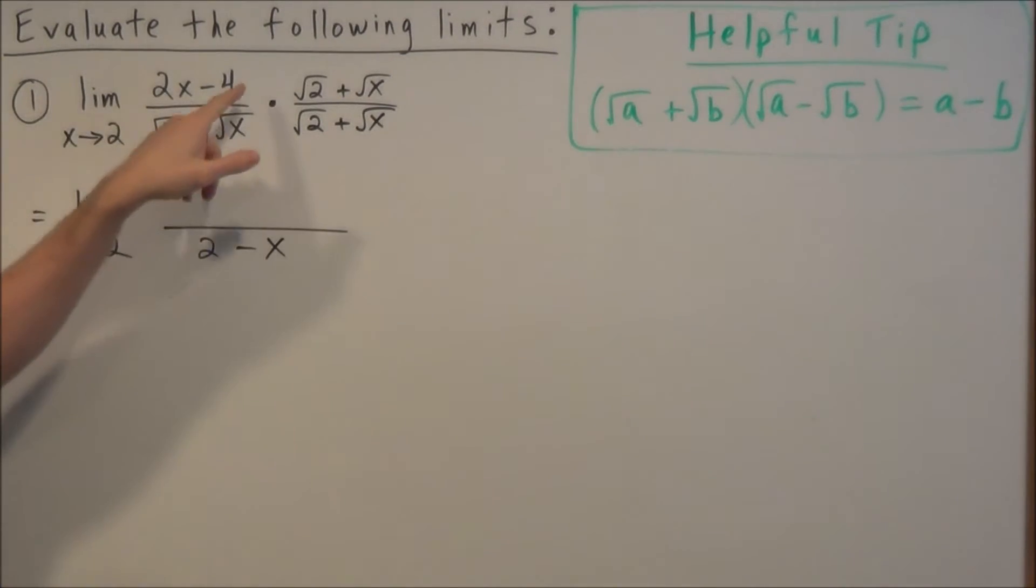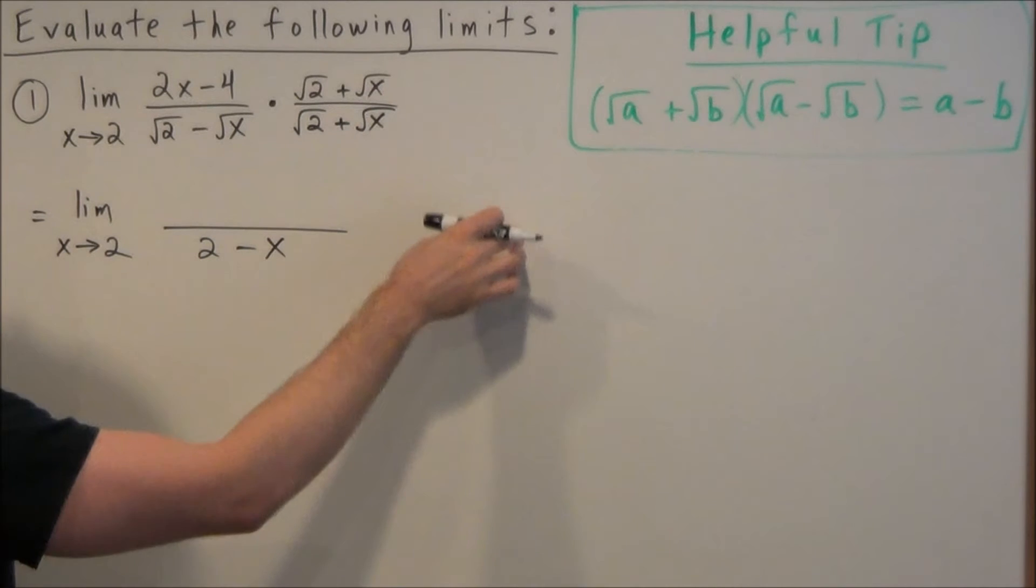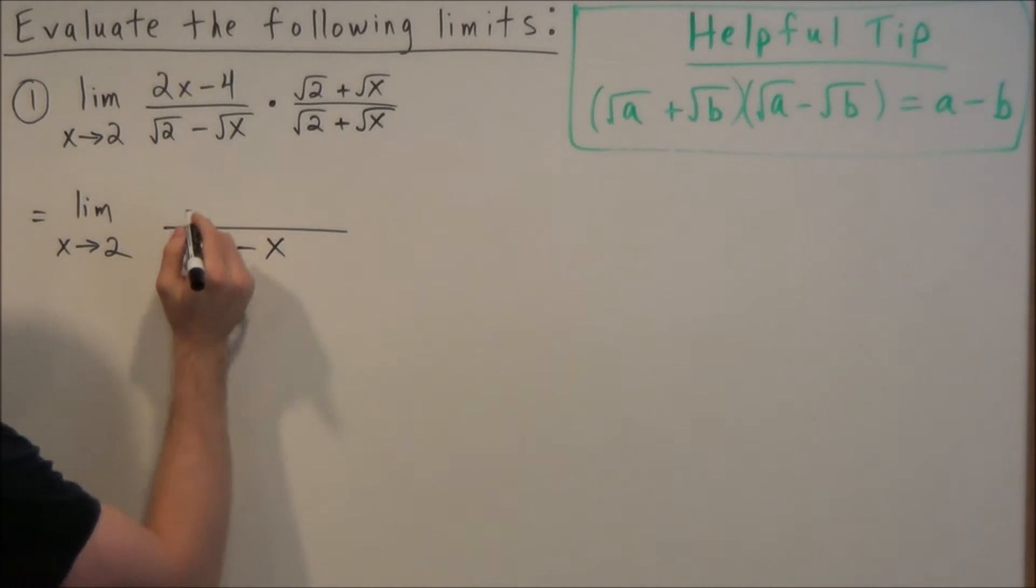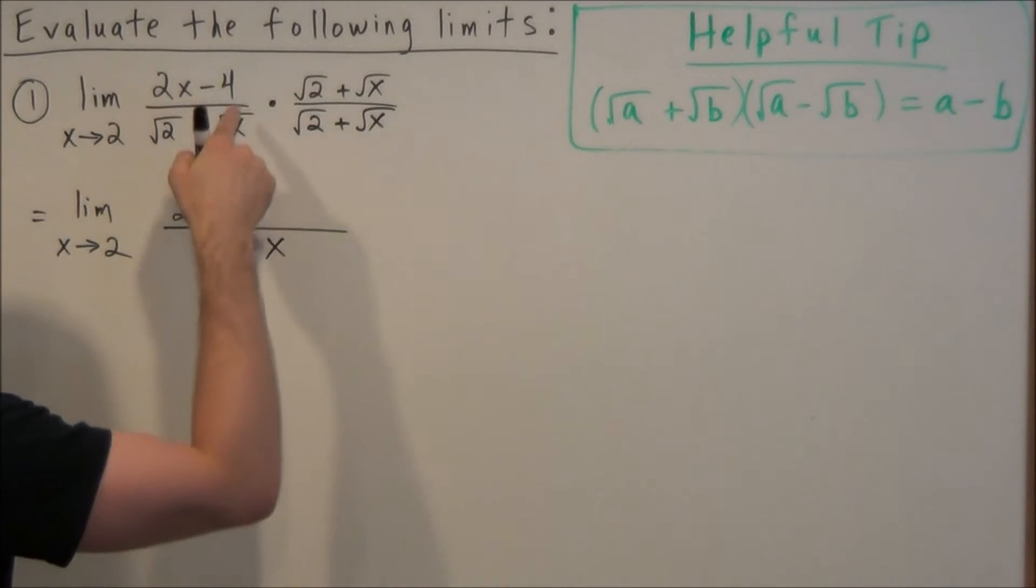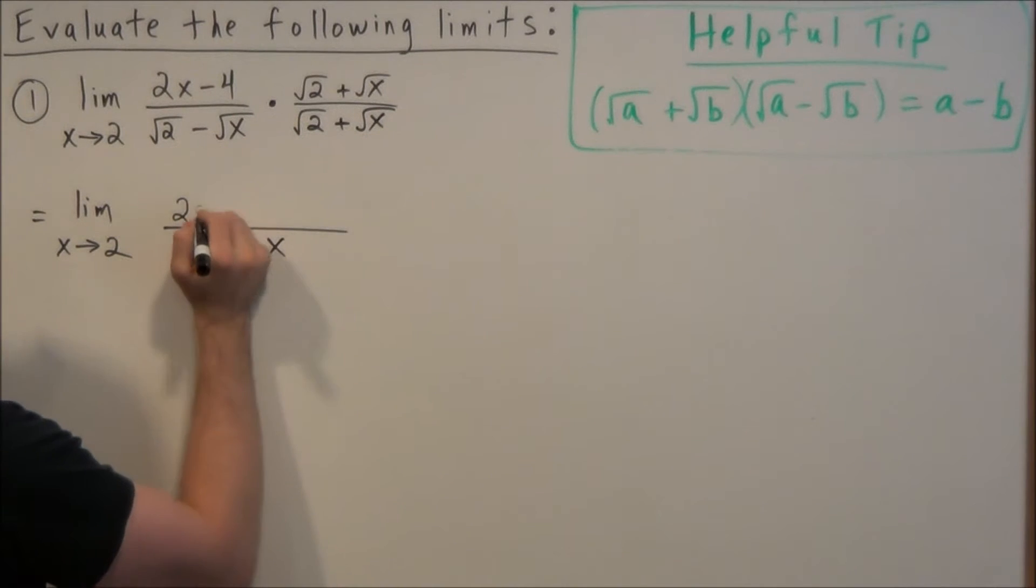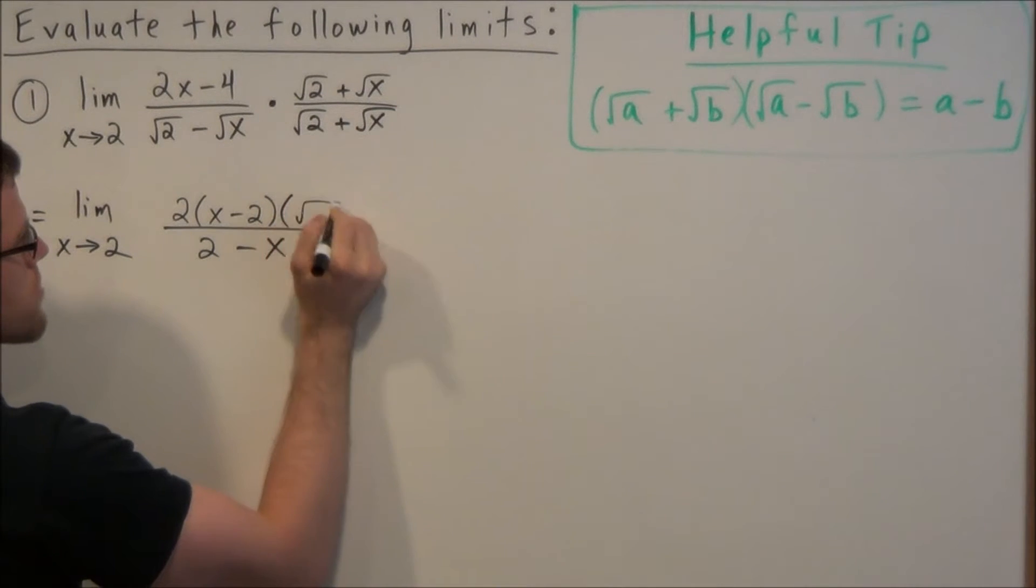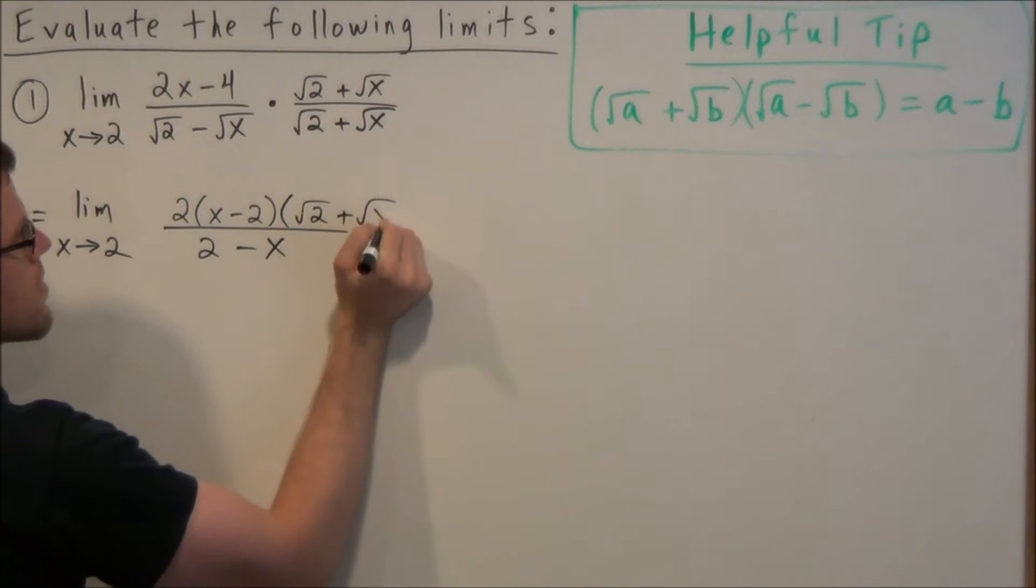So using this helpful tip, it'll kind of speed up the process and your work won't take up a ton of space. Now, when we multiply the terms in the numerator, we have to be careful. The goal, because our form is indeterminate, is to get factors to cancel. Like we want 2 minus x to cancel. So if we multiply these two together, that's going to make this really complicated and not allow us to cancel any factors. So we're going to take 2x minus 4, and we're going to factor that as 2 times x minus 2. And now we're just going to write the other factor next to it, radical 2 plus radical x.